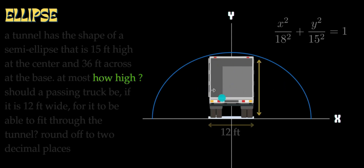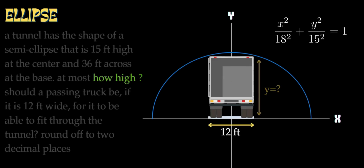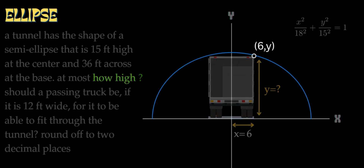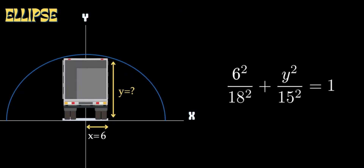When you look at the tunnel, we have to utilize the ellipse because the truck has to pass under the tunnel. The track has to have a limited height, and to find that we check the maximum height. We need to find the y value — what y value corresponds to x equal to 6? We ask this equation to solve for y.